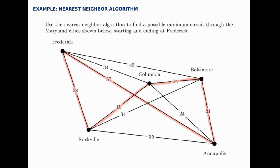This is not guaranteed to be the absolute best circuit — in fact it's only the third best, but it's pretty close. It's only seven miles longer than the absolute best. For a pretty easy way of solving it, the nearest neighbor algorithm gets decent results even while being very simple to run.